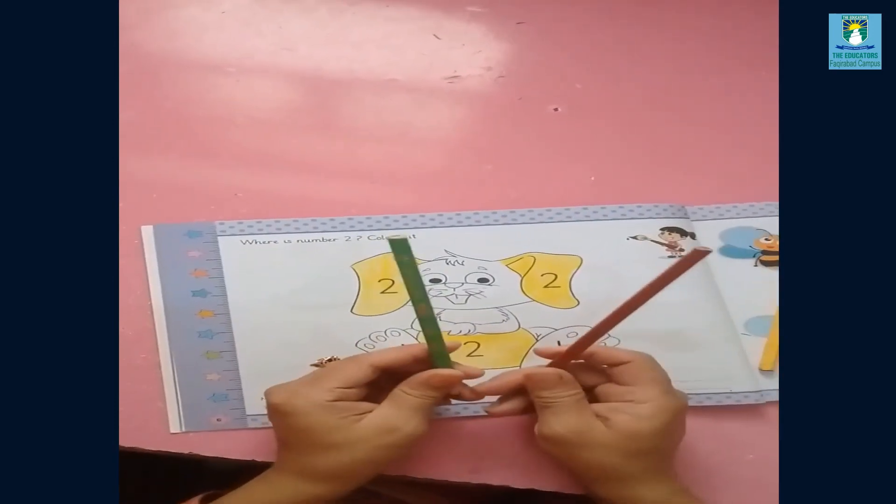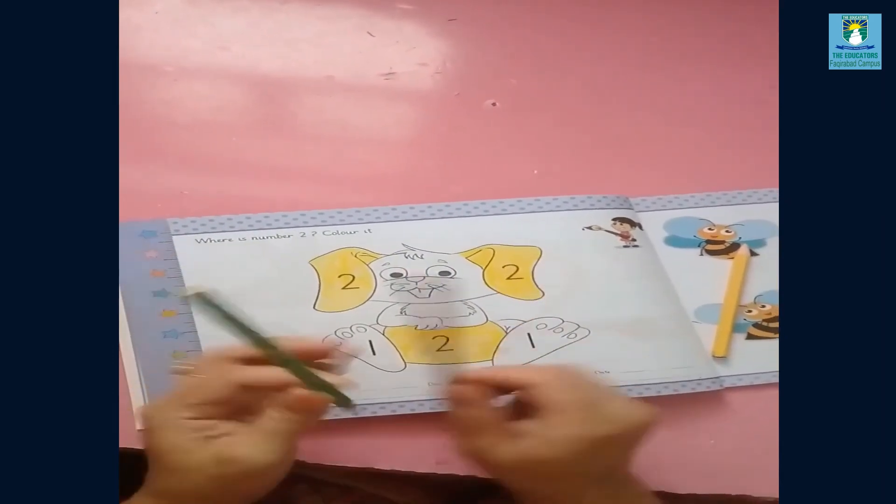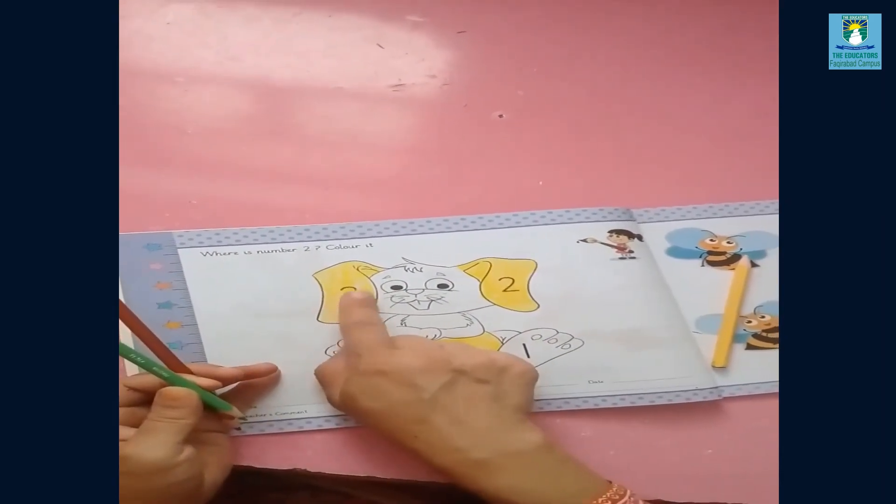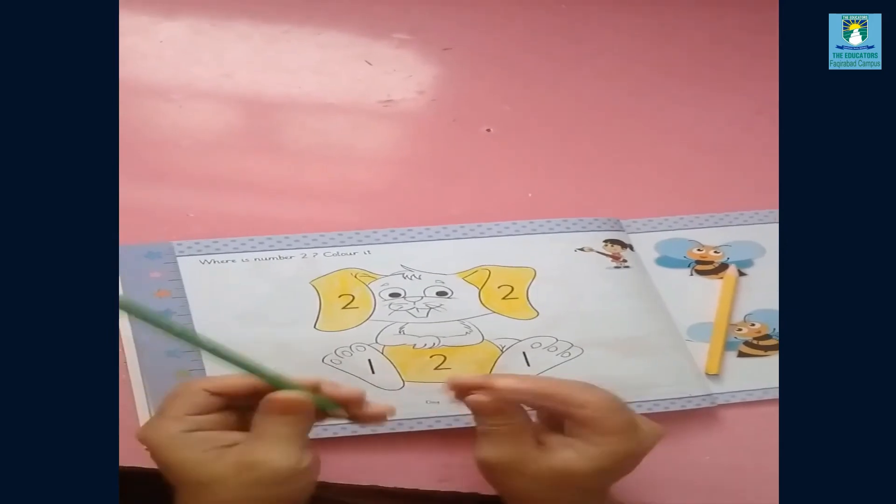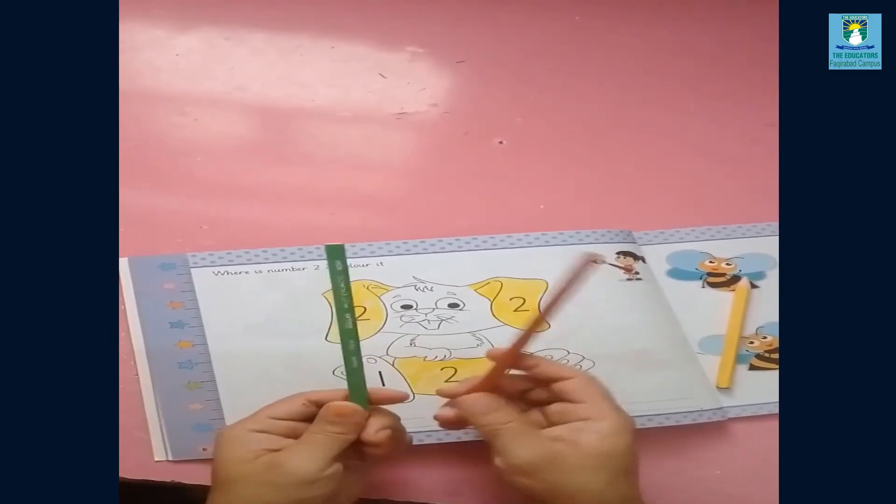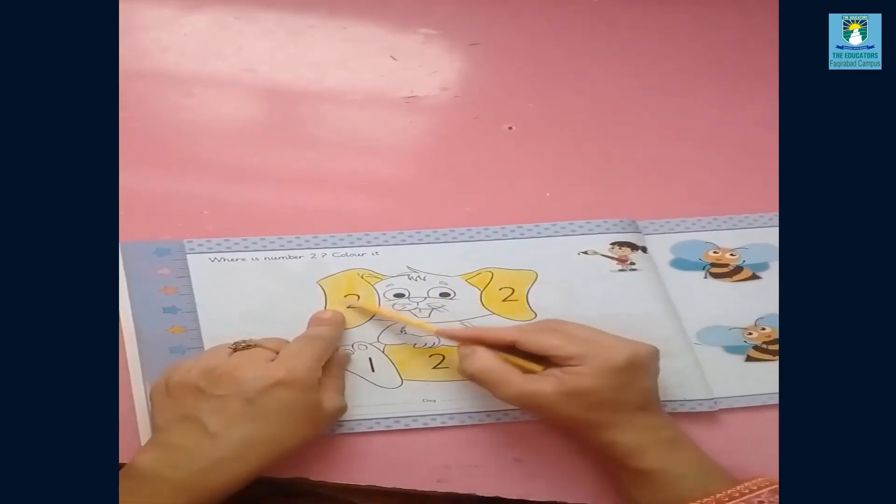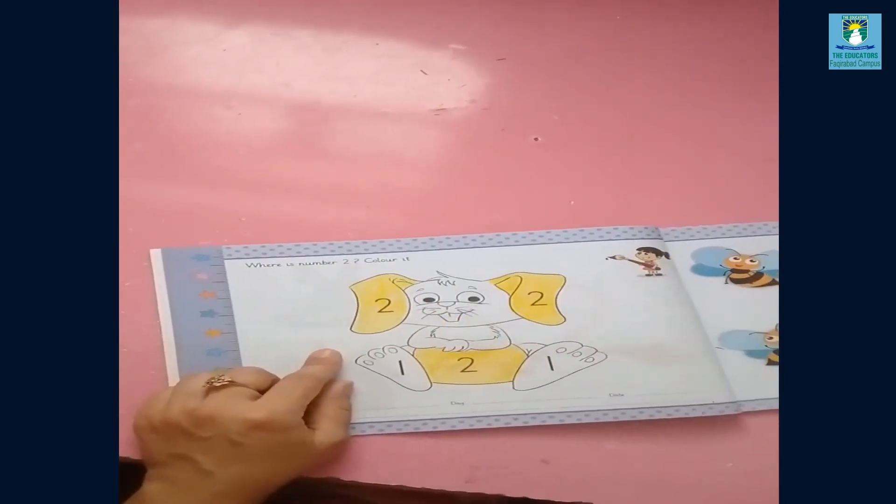These are two colors. So we can say these are two colors. This is number two. Number two is related to these two colors. How many colors? Two colors. So you will color the number two.